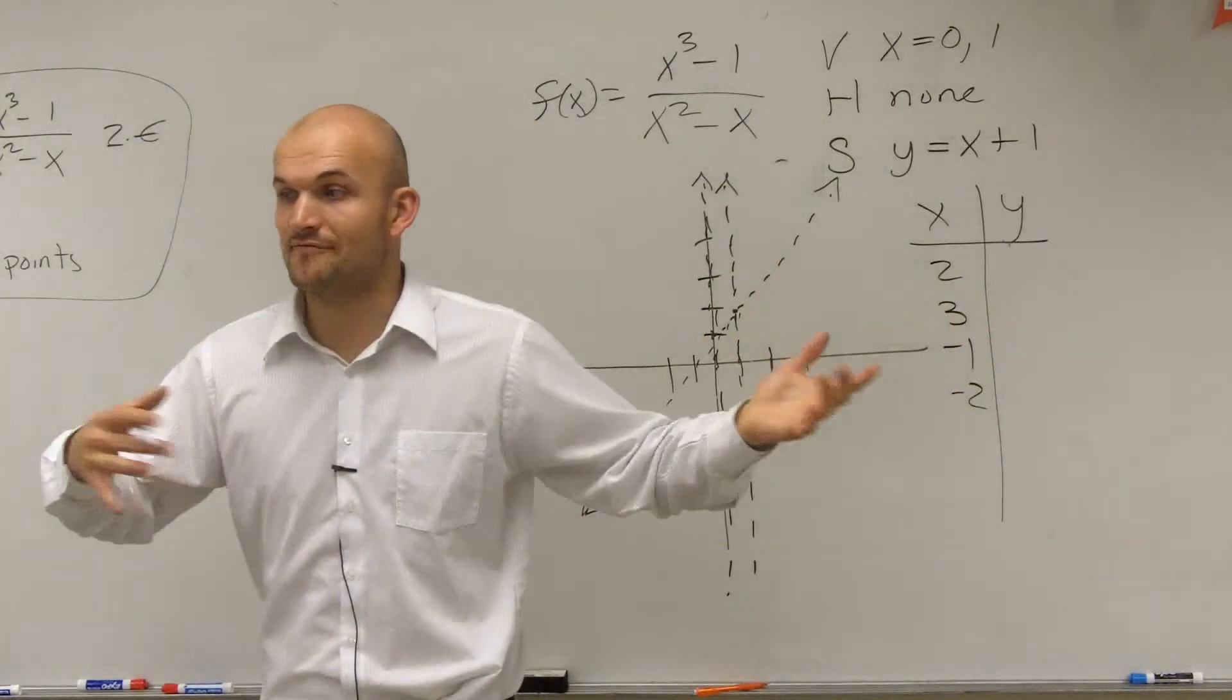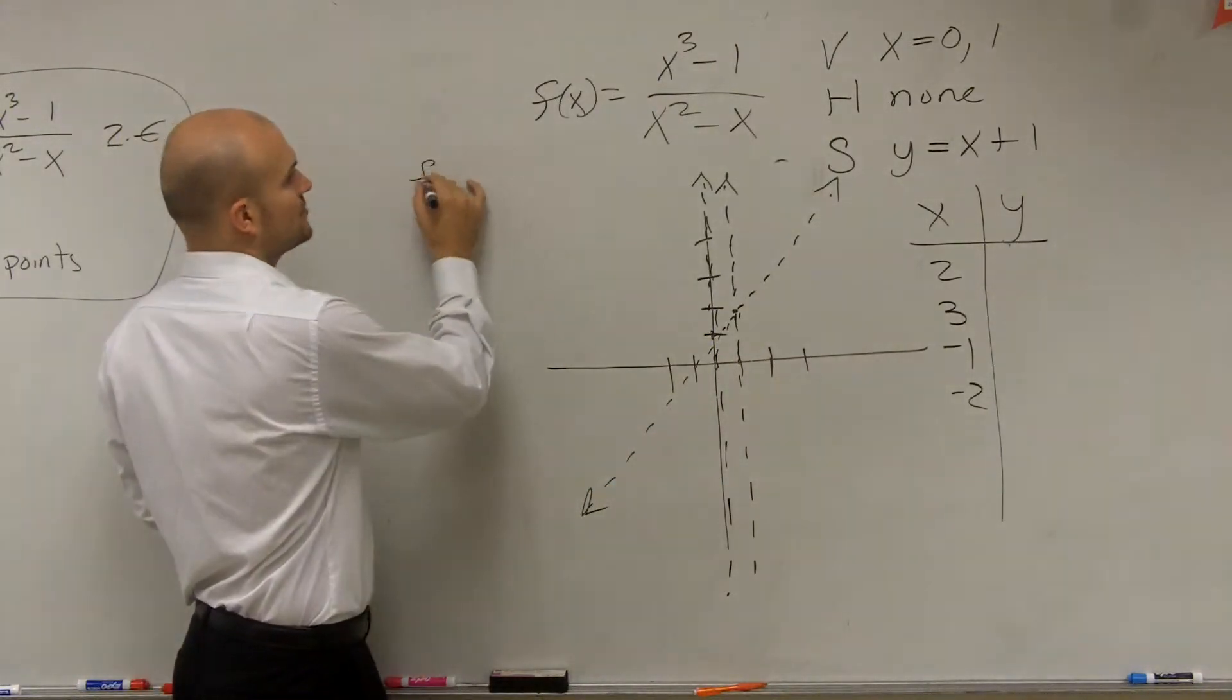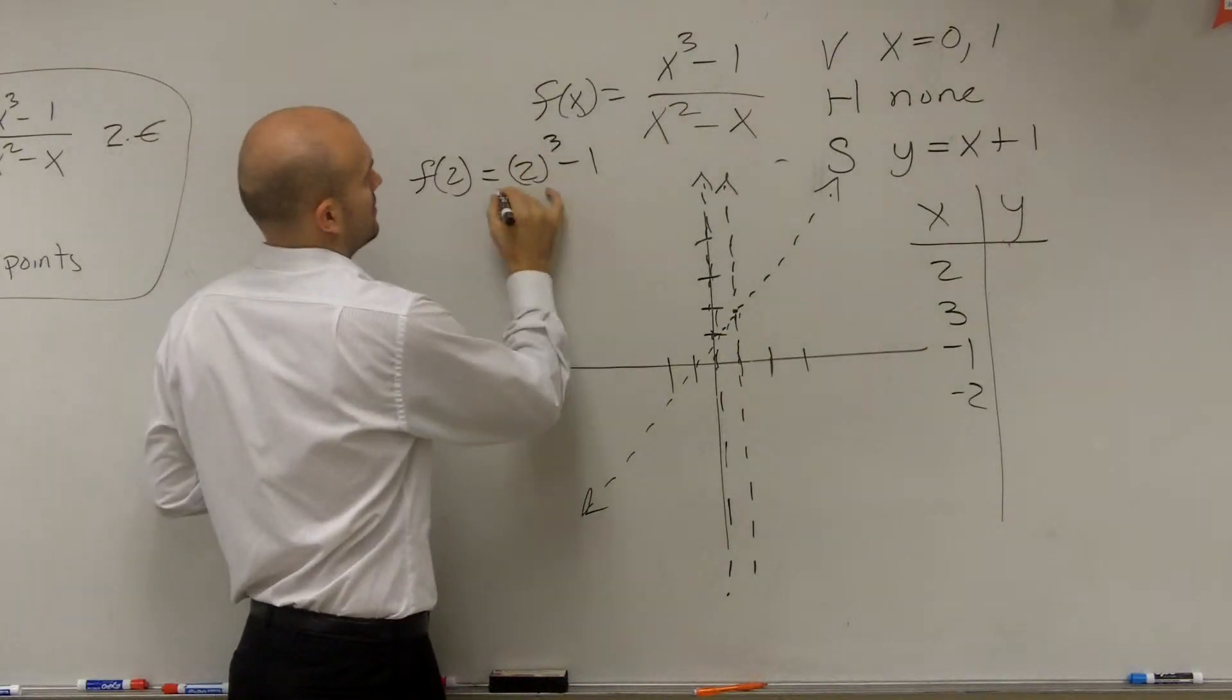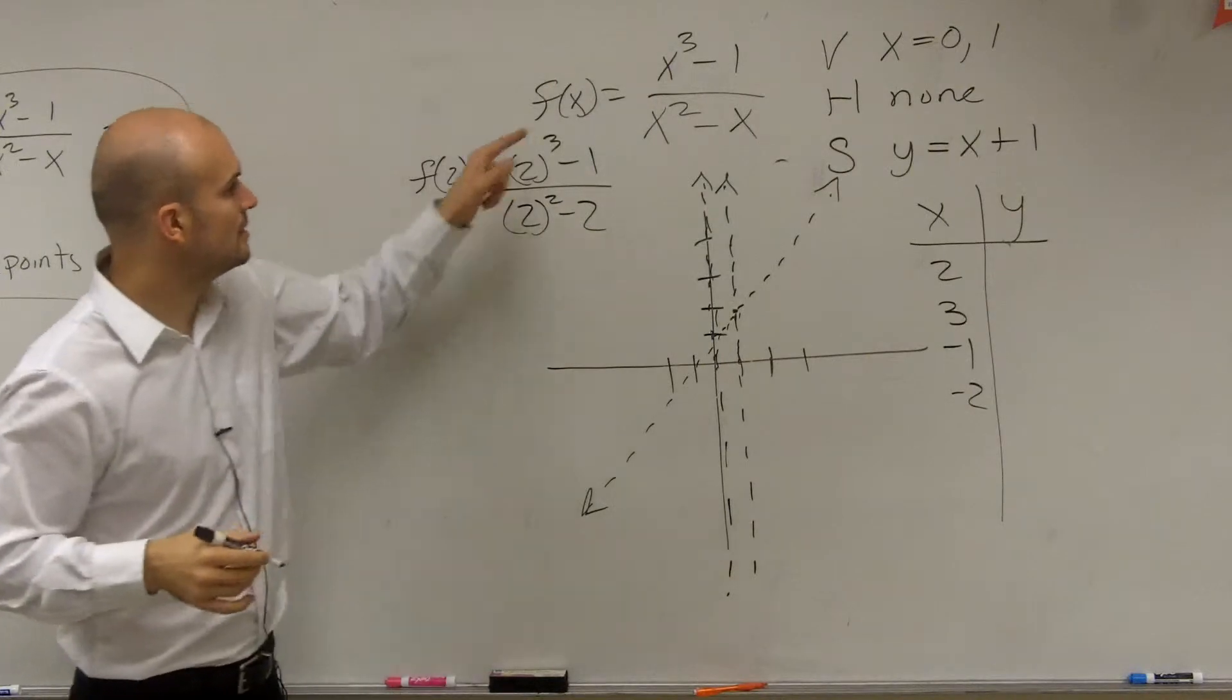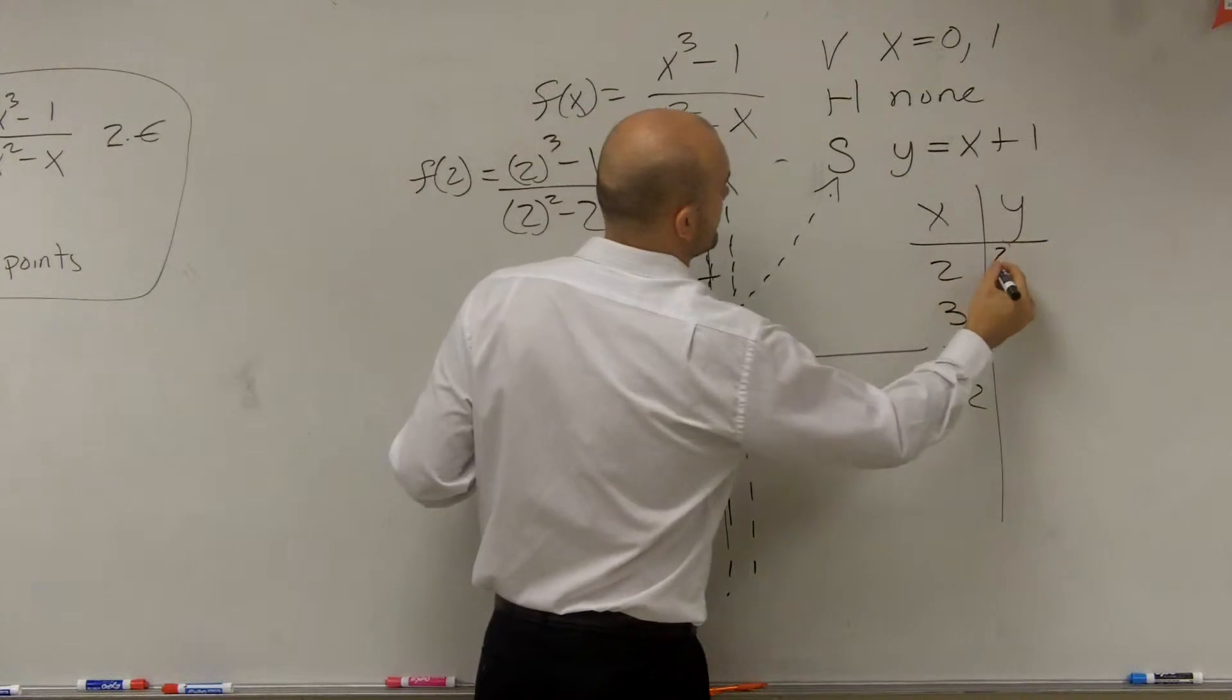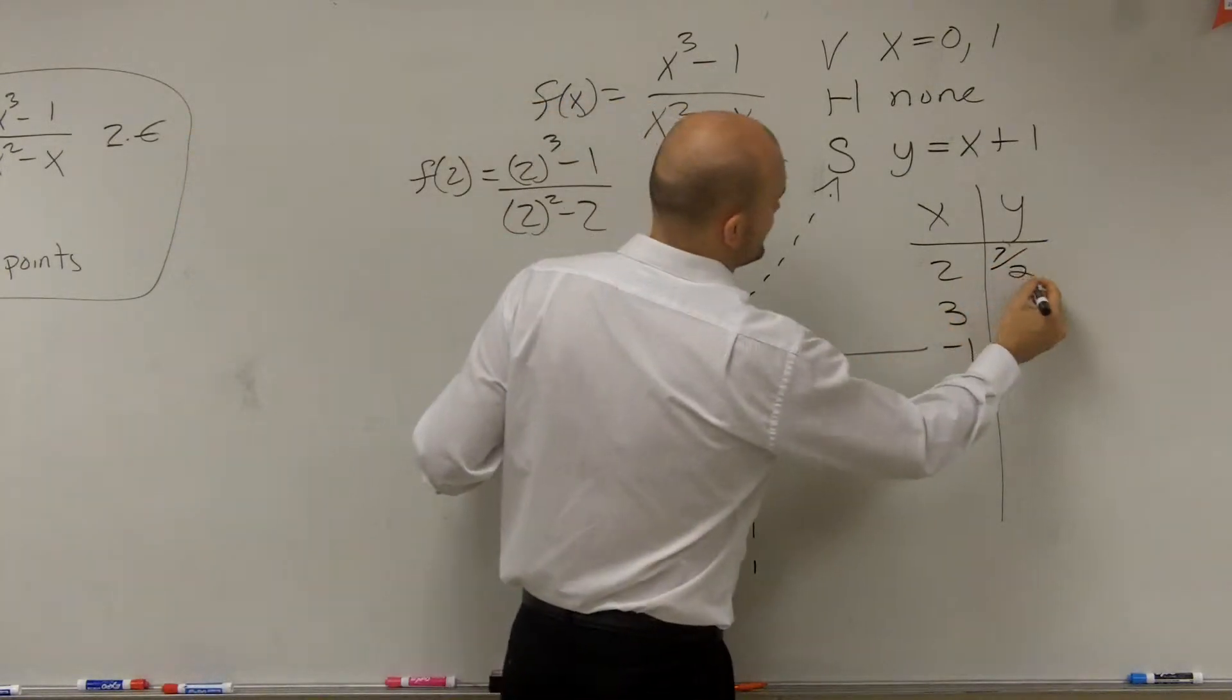If you have a graphing calculator, you can easily graph it, find the table, and you're good to go. If you don't, you're going to have to plug in each one of these points. So 2 cubed is going to be 8 minus 1 is 7. Divided by 4 minus 2 is 2. So it's going to be 7.5.